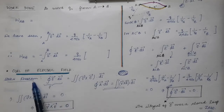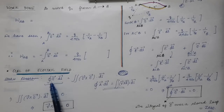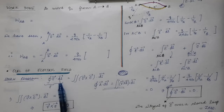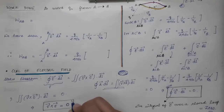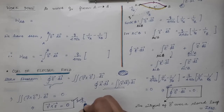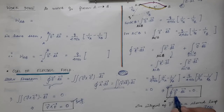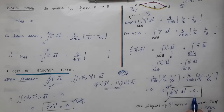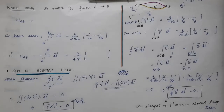Since the left-hand side of Stokes' theorem for the electric field is always zero — because the line integral of electric field over a closed loop is always zero — the surface integral of curl E is always zero. Therefore, the curl of the electric field vector is always equal to zero. This is another important result.